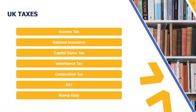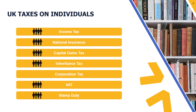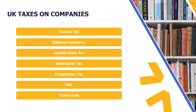The UK taxes payable by individuals are: income tax, national insurance, capital gains tax, inheritance tax, VAT, and stamp duty. Contrasting that with companies — the applicable taxes are national insurance, corporation tax, VAT, and stamp duty. So just note that companies do not pay income tax, they do not pay capital gains tax, and they do not pay inheritance tax. I will revisit this point as we proceed through the topics.